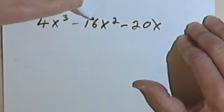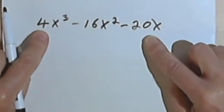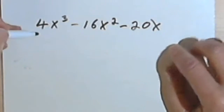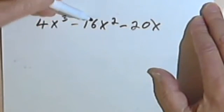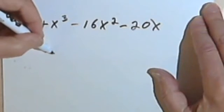So I've got a 4, a 16, and a 20. They're all even numbers, so I know I can factor out a 2. I can divide them all by 2. Let's see if we can divide them all by 4. So I know I can factor a 4 out of the first term. 4 times 4 is 16, and 4 times 5 is 20, so I can factor a 4 out of everything.